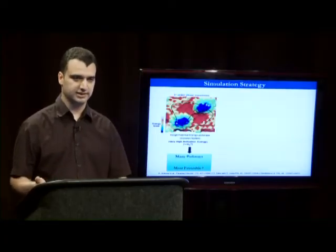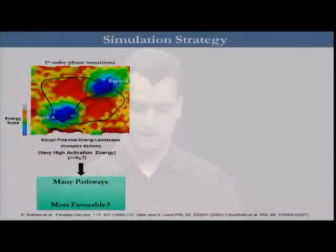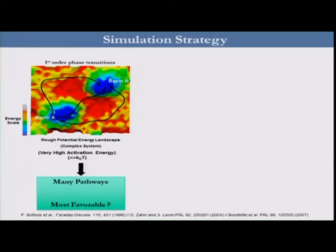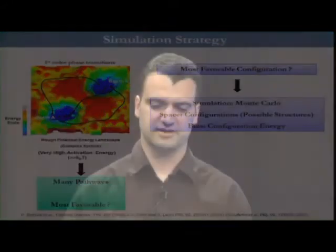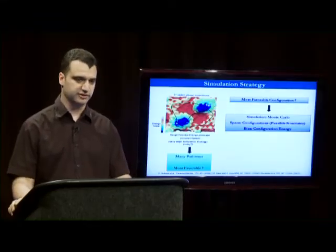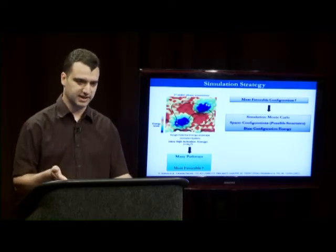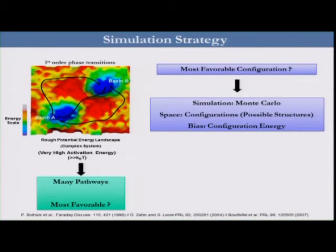This method allows us, in a situation where we have many possibilities to transform from A to B, to converge directly to the real transition mechanism without going through all different possibilities. The basic idea comes from standard Monte Carlo procedures: imagine you have a system and you would like to find its most favorable configuration for a given ensemble of atoms. You can explore the configuration space and use the configuration energy to converge directly to the desired result.